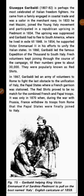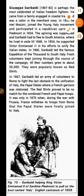In 1867, Garibaldi led an army of volunteers to Rome to fight the last obstacles to the unification of Italy. He marched into the Papal States where a French garrison was stationed. However, the Red Shirts proved to be no match for the combined French and Papal troops.